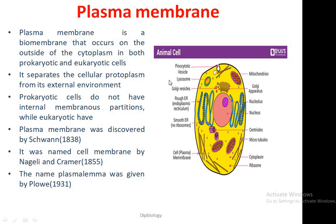This is a typical diagrammatic representation of eukaryotic or animal cells. Its outermost surrounding is known as the plasmalemma or cell membrane, and it contains many cell organelles like mitochondria, which is considered the powerhouse of the cell; endoplasmic reticulum — both rough and smooth types; Golgi vesicles; lysosomes, which are considered the suicidal organelles of the cell; Golgi apparatus; nucleolus; centrioles; microtubules; and ribosomes, which are known as the protein factory of the cell.